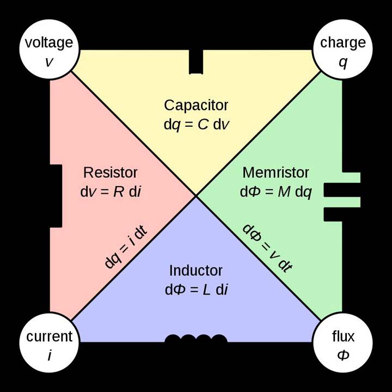A Voltage Controlled Voltage Source generates a voltage based on another voltage with respect to a specified gain, and has infinite input impedance and zero output impedance. A Voltage Controlled Current Source generates a current based on a voltage elsewhere in the circuit with respect to a specified gain, used to model field effect transistors and vacuum tubes. It has infinite input impedance and infinite output impedance, and the gain is characterized by a transfer conductance with units of Siemens.